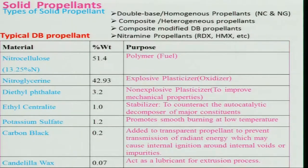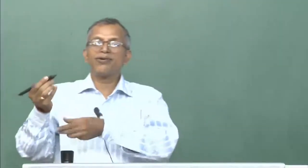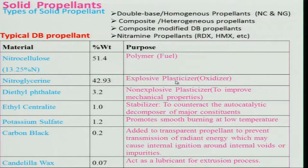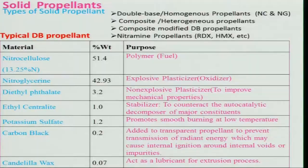A typical double base propellant contains nitrocellulose (13.25% nitrogen, 51.4% by weight) — a polymer used as fuel — and nitroglycerin (42.93%), which is a liquid explosive plasticizer and oxidizer. Several additives are present in very small percentages. Diethyl phthalate at about 3.2% is used as a non-explosive plasticizer to improve mechanical properties, because the propellant is subjected to very high pressure.